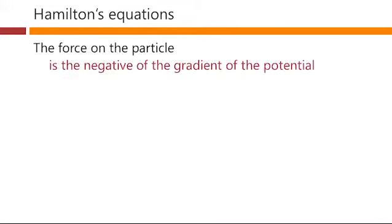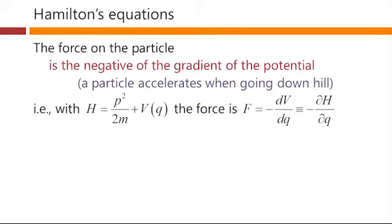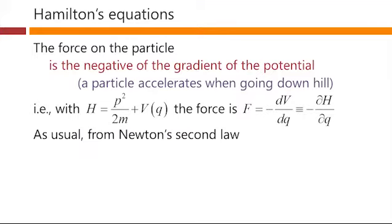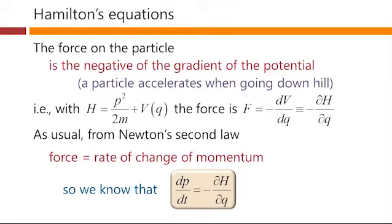The force on the particle is just the negative of the gradient of the potential — that is, a particle accelerates when it's going downhill. So the force on the particle is the negative of the gradient of the potential because downhill is a negative gradient. With the Hamiltonian being p squared over 2m plus V of q, the force, which is minus dV/dq, is therefore minus the partial dH/dq. If we take the partial derivative of the Hamiltonian with respect to q, we simply get minus the force. So the force is minus dH/dq. As usual from Newton's second law, force is the rate of change of momentum, so dp/dt equals minus partial dH/dq.